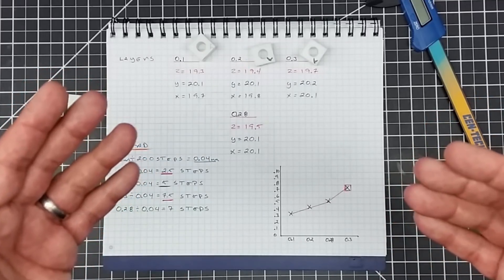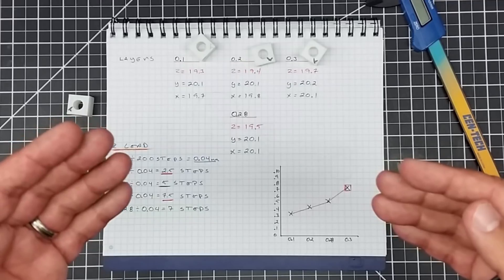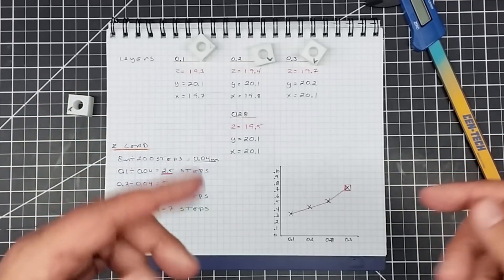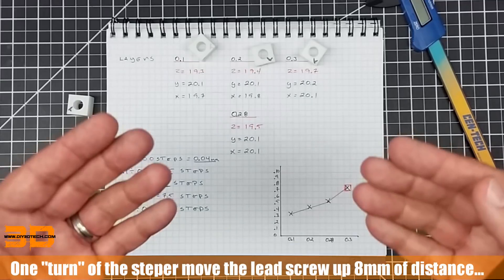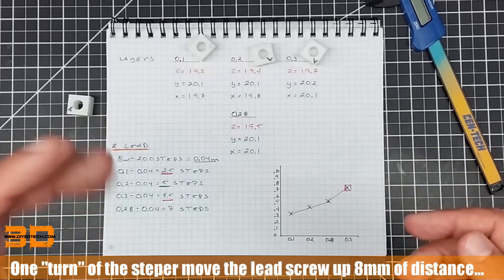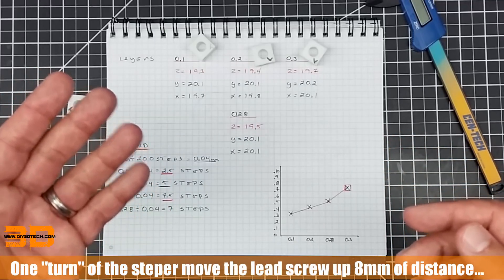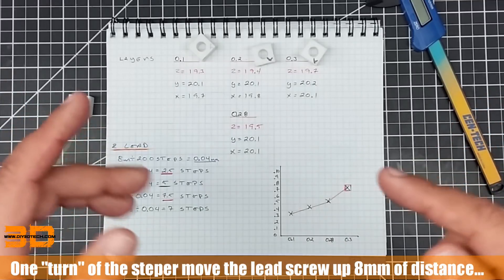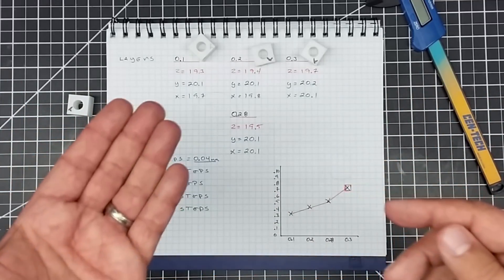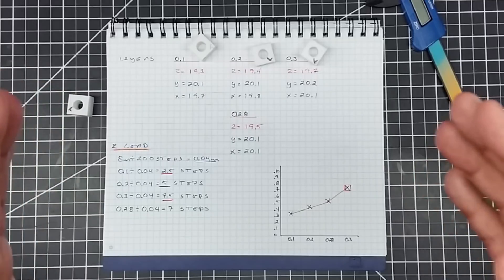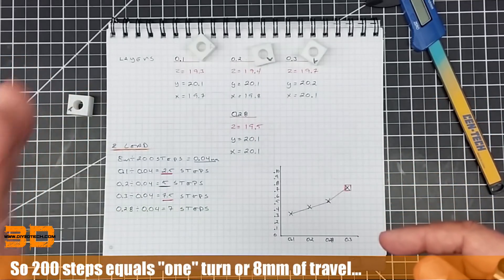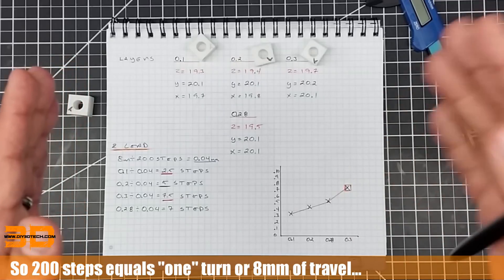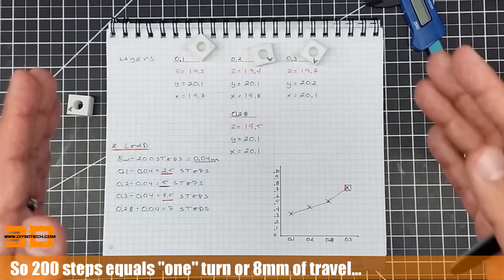is one revolution of the stepper motor produces 8 millimeters of travel on the hot end. So if the motor turns once, the hot end goes up 8 millimeters. So it takes 200 steps to turn that one time. So 200 steps equals 8 millimeters. So if we divide this out down here, so if I take 8 millimeters divided by 200, that means one step equals 0.04 millimeters.